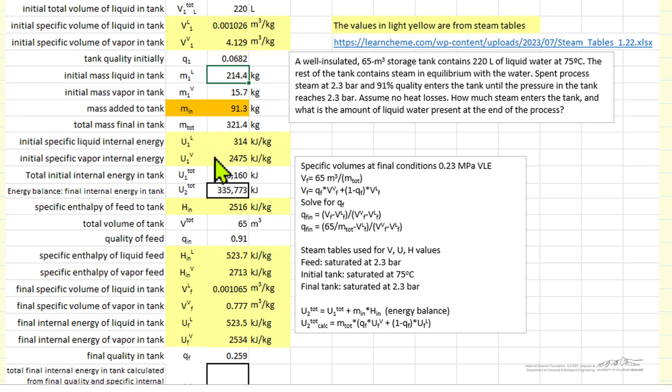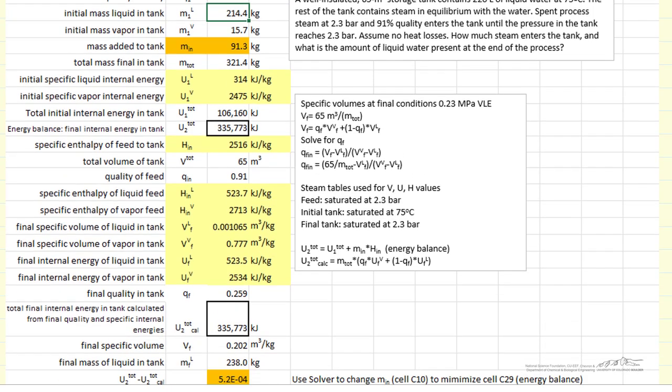Likewise internal energy at 75. The enthalpy in, which is calculated from these two specific enthalpies, and the quality is at 2.3 bar. And then the final conditions of volumes, internal energy, also at 2.3 bar, since that's a final pressure in the system.